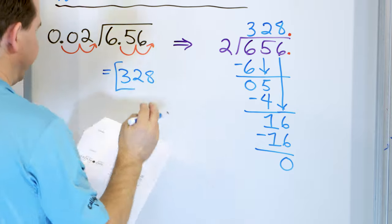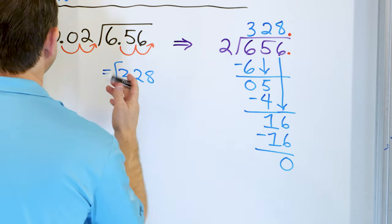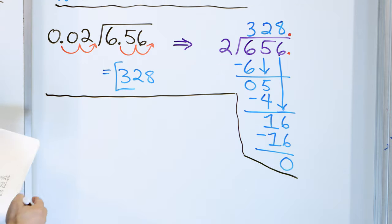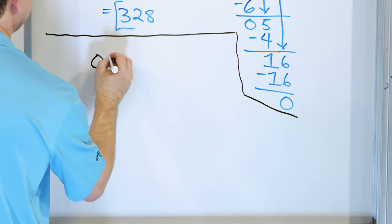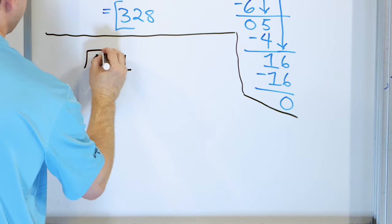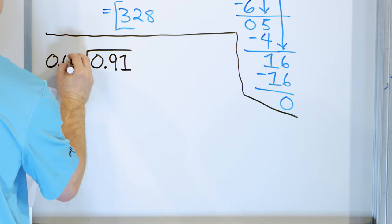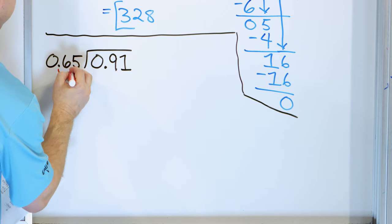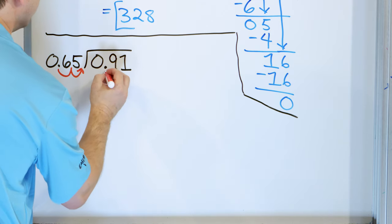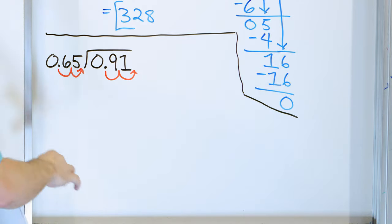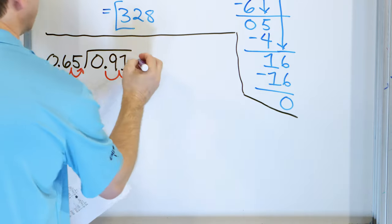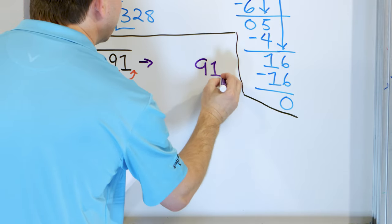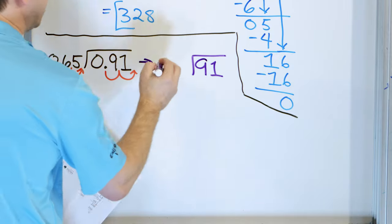That was a whole number answer. Alright, next problem. Let's solve the next problem down here. Let's say we're solving 0.91 divided by 0.65.